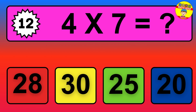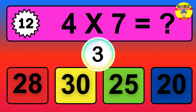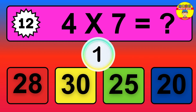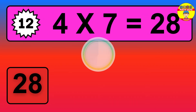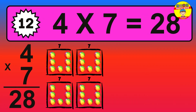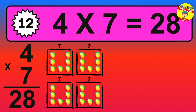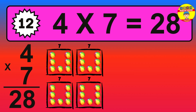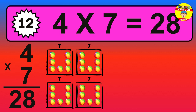Question twelve: four times seven equals what? The answer is four times seven is twenty-eight. To calculate, we have four groups with seven balls each one. So how many balls do we have? Twenty-eight balls.